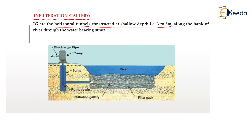We will now discuss where we construct the infiltration gallery. The soil present near the bank of a river is moist. If we want to extract water from that soil, we construct an infiltration gallery along the bank of the river. We generally construct a sump well or storage tank, which is deep inside the earth. From this sump well, we connect various perforated pipes with some inclination so that water flows into the sump. The water present in the soil slowly moves to the perforated pipe, and from there it moves to the sump well due to the inclination. This water stored in the sump tank is then supplied to various households in the summer season when there is a shortage of water.